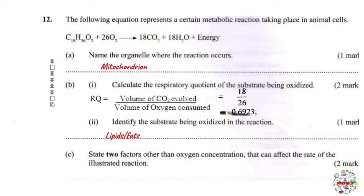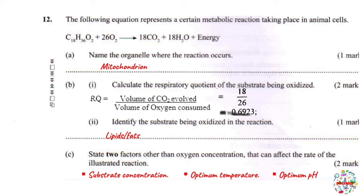Part C: state two factors other than oxygen concentration that can affect the rate of respiration. Apart from oxygen concentration, you have substrate concentration — if you have a lot of substrate, the rate of respiration will be fast. Other factors include favorable pH, optimum temperature, enzyme concentration, and enzyme inhibitors. Respiration is a process controlled by enzymes, so whatever affects enzymes will ultimately affect respiration.